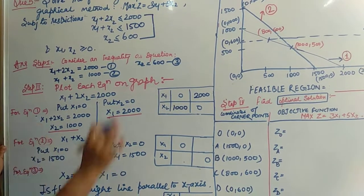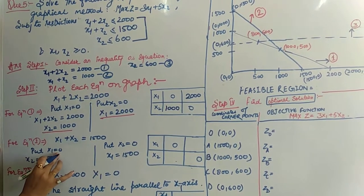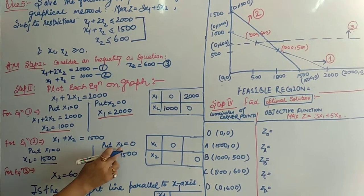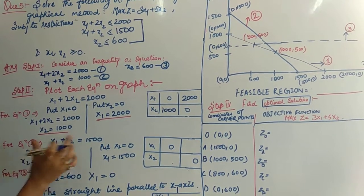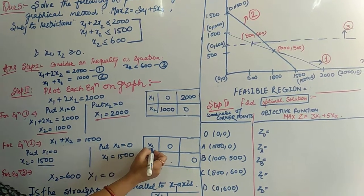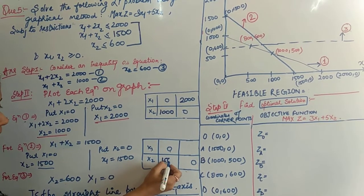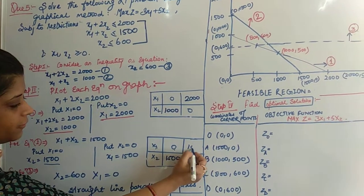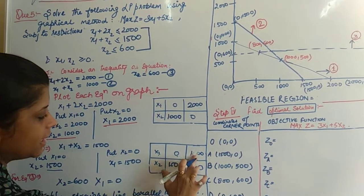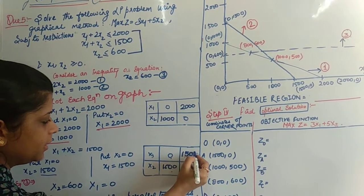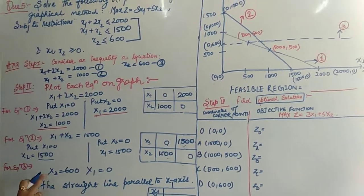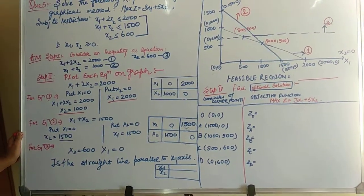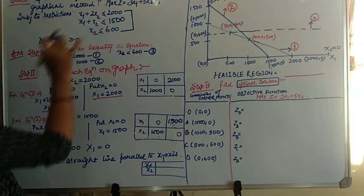Taking Equation 2: put x1 = 0, we get x2 = 1500; put x2 = 0, we get x1 = 1500. So the coordinates for the second equation are (0, 1500) and (1500, 0). Equation 3 is a line parallel to the x1 axis because x2 = 600, so x2 = 600 throughout this line.